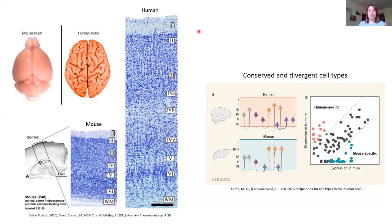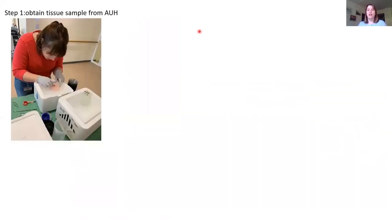So we are fortunate here at Aarhus University to have a collaboration with the neurosurgery team at Aarhus University Hospital, where we receive living brain tissue samples from generous donors. These donors are patients that are already undergoing a surgery to have a piece of their brain removed. So we receive a piece of cortex that would normally have just been thrown away.